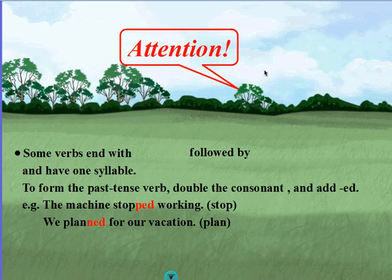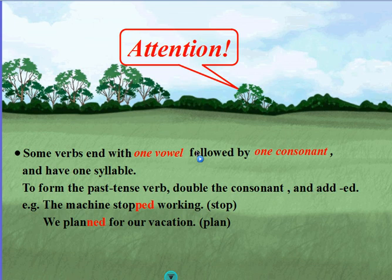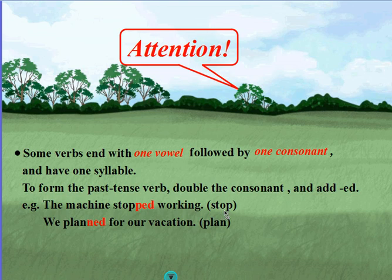One last rule, guys. Some verbs end with one vowel followed by one consonant and have one syllable. To form the past tense, double the consonant and add -ed. Example: the machine stopped working. The base verb is stop — one syllable, one vowel followed by one consonant — so we doubled the consonant p and added -ed to show that it happened in the past.